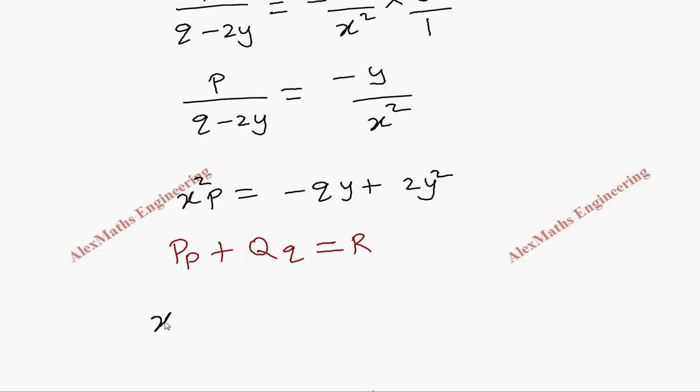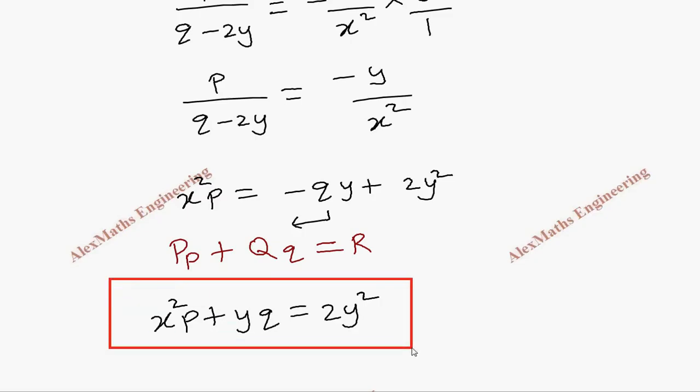Writing the first term, that is x²p, then q - it also be the second one. I have to take it to this side, so plus yq, and on the other side it is 2y². This is our required partial differential equation after eliminating the arbitrary function.